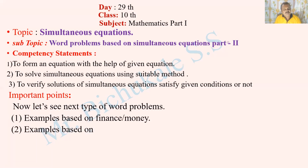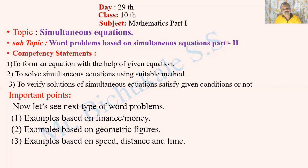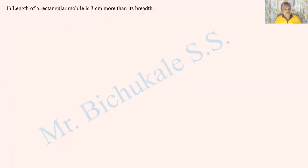Second example is based on geometric figures, and third example is based on speed, distance and time. For the geometric figure example: the length of a rectangular mobile is 3 cm more than its breadth, and its perimeter is 34 cm. Find the length and breadth of the rectangle.